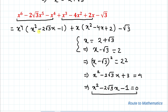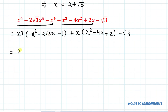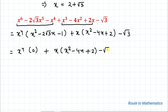Now let's substitute the value of (x² minus 2√3·x minus 1), which is 0, into our factored expression. So we can write x⁴ multiplied by 0, plus x multiplied by (x² minus 4x plus 2 minus √3). The first term vanishes, leaving x multiplied by (x² minus 4x plus 2 minus √3).